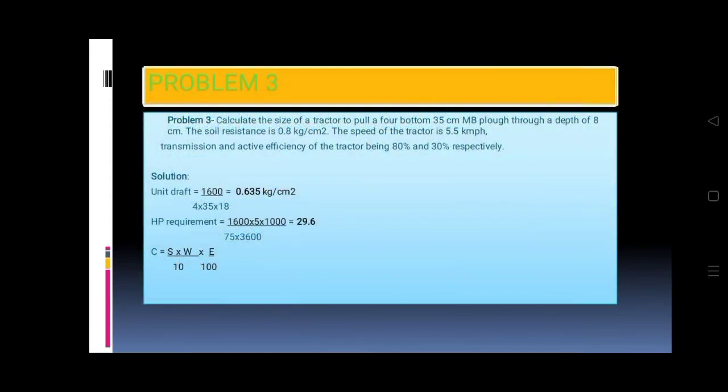Problem 3: Calculate the size of a tractor to pull a 4 bottom 35 centimeter MB plow through a depth of 8 centimeter. The soil resistance is 0.8 kilogram per centimeter squared. The speed of the tractor is 5.5 kilometer per hour.